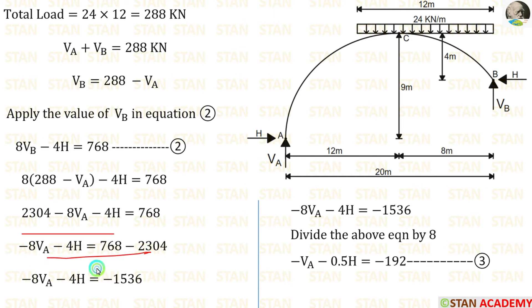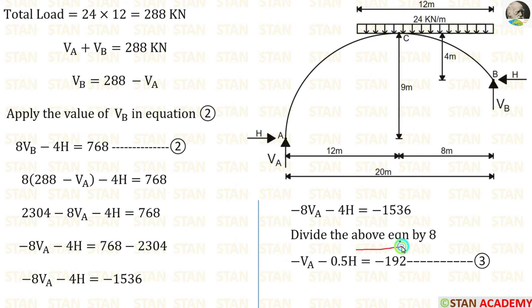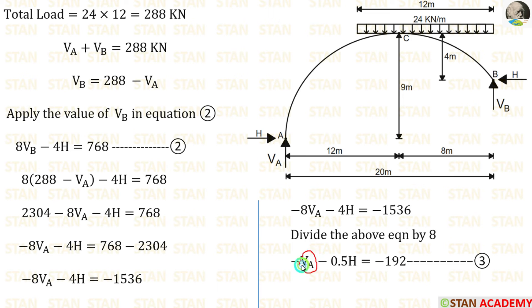After applying VB as 288 minus Va in equation number 2, we can make some simplifications. Finally, we are getting a new equation. With Va, we are having some coefficient, so we have to divide so that we can get Va alone. Dividing the equation by 8, we get a simplified form with no coefficient on Va. Let us keep this equation as number 3.